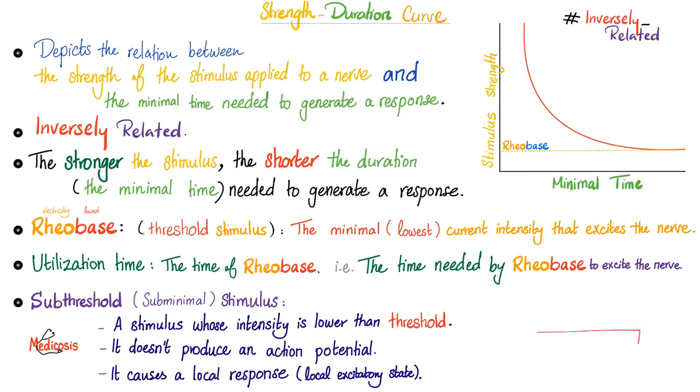To understand the threshold, imagine I'm jumping over a bar—that's the threshold. If I jump lower than this, I'll hit it. I have to jump over it. As long as you are above the threshold, you will be excited. But below the threshold? What is a subthreshold? Beneath the threshold. You can call it a subminimal stimulus. This is a stimulus whose intensity is lower than the threshold. It does not produce an action potential. It causes a local response or local excitatory state. But this is not an action potential because the action potential follows the all-or-none law.